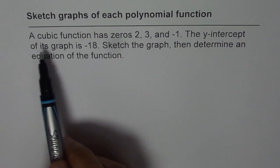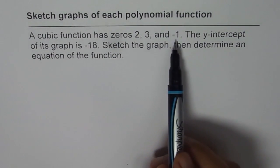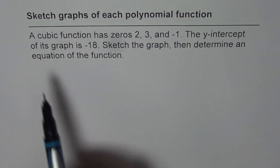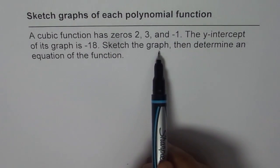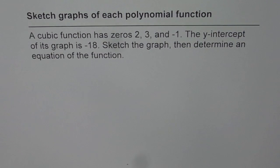It says a cubic function has zeros 2, 3, and minus 1. The y-intercept of its graph is minus 18. Sketch the graph, then determine an equation of the function.